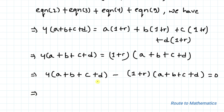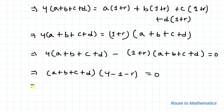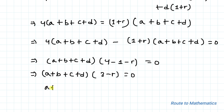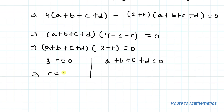Taking (a+b+c+d) common, we have (a+b+c+d)(4 minus 1 minus r) = 0, which implies (a+b+c+d)(3 minus r) = 0. From this we can write either 3 minus r = 0, giving r = 3, or a+b+c+d = 0.